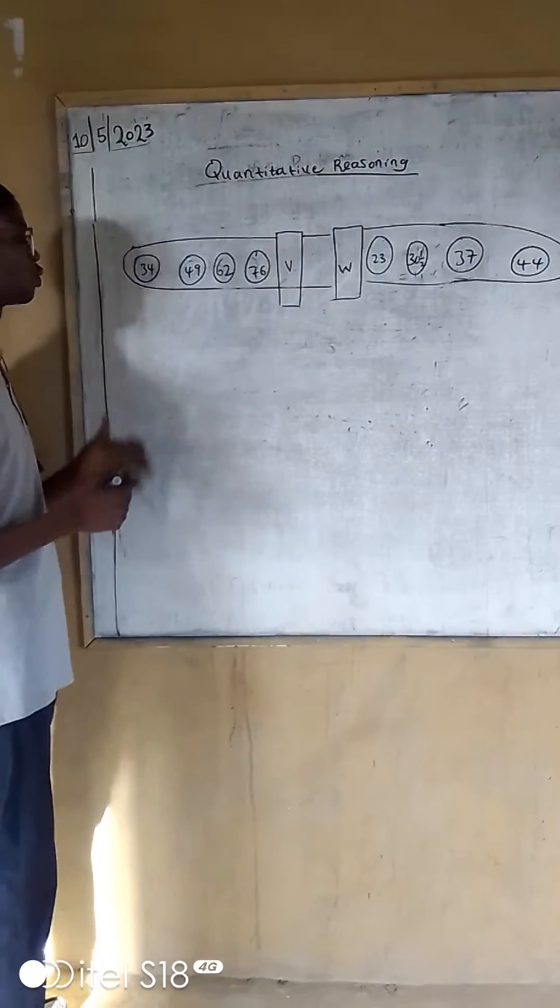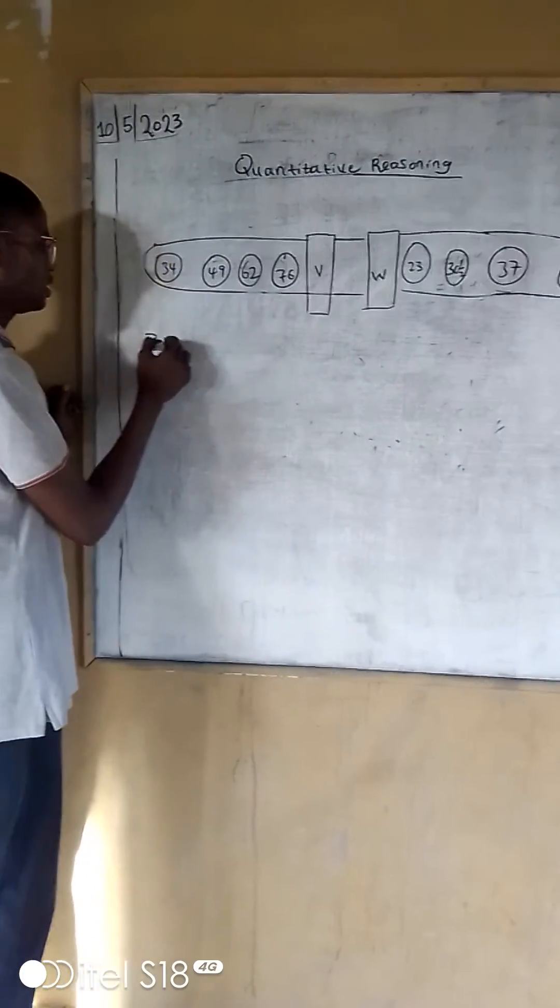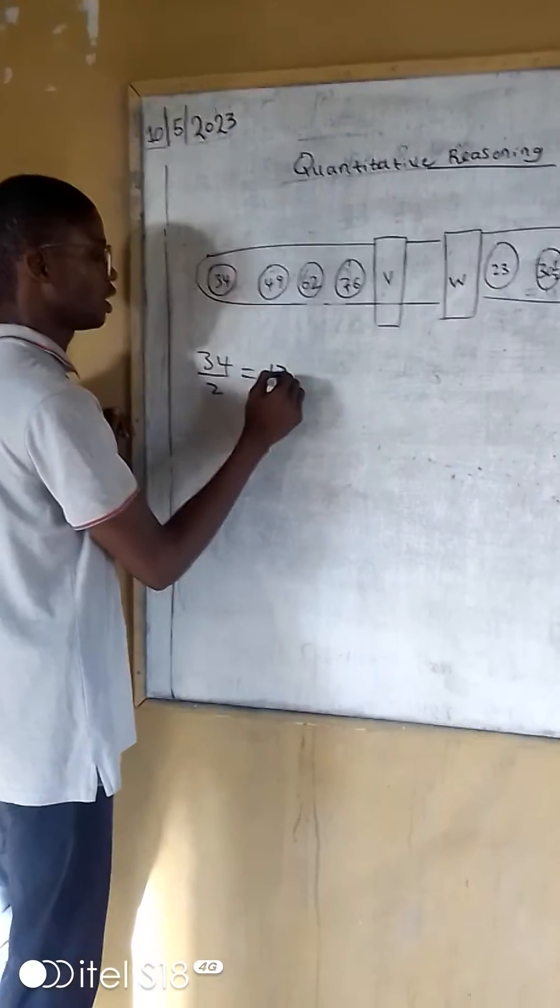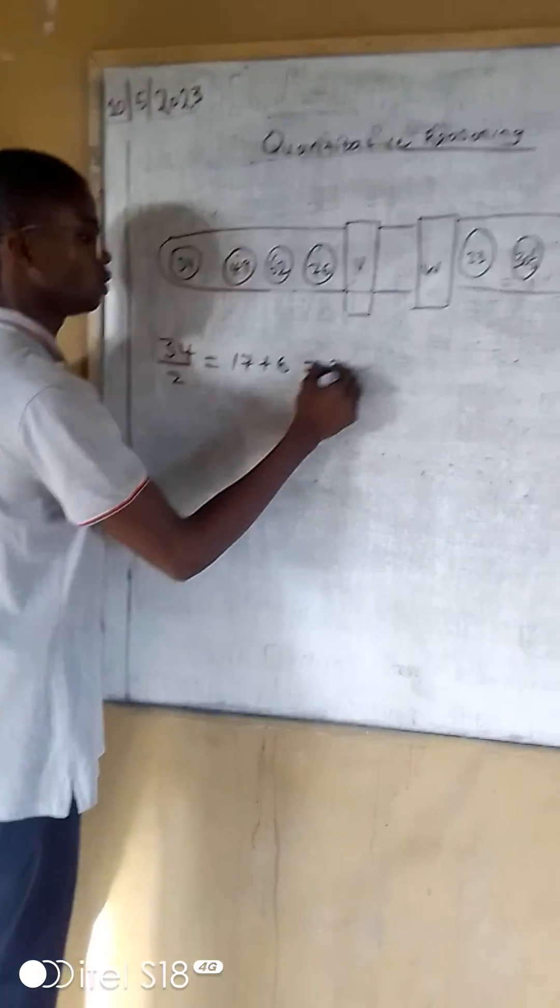So if you look at this clearly, you will see that what you have to do is dividing the first number by 2 and what you get plus 6, which gives 23.